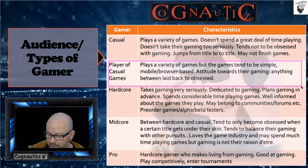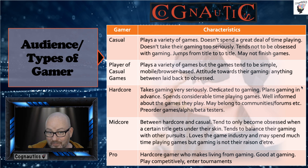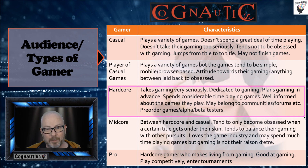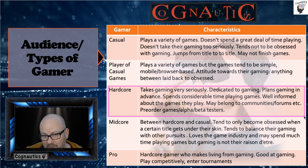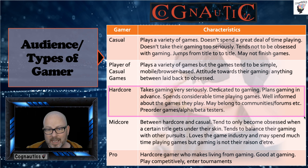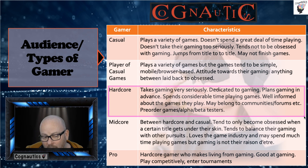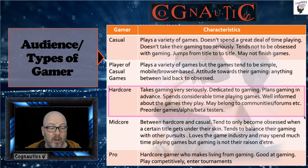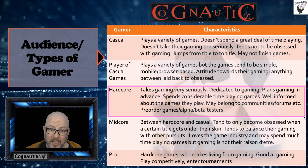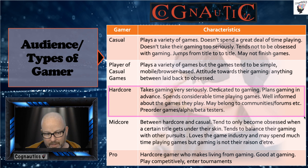The next one is the hardcore gamer — probably the type everyone recognises, often depicted in films. They take gaming very seriously and are very dedicated to it. They'll plan gaming sessions in advance, spend a lot of time playing, belong to forums and groups, and alpha and beta test new versions of games. They know a great deal about the gaming industry. Hardcore gamers tend to play titles on dedicated platforms such as an Xbox or PlayStation rather than mobile-based games.